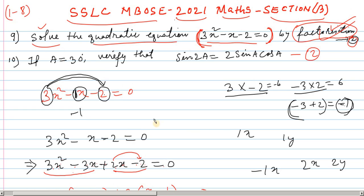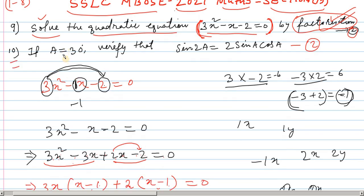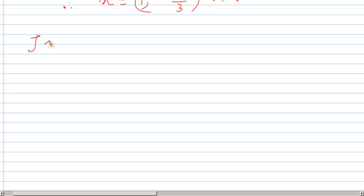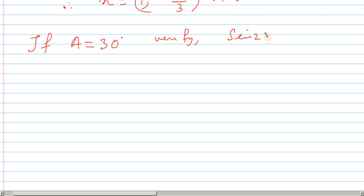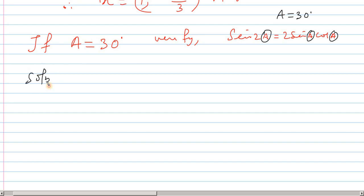Now question number 10. If A equals 30 degrees, the question from the question paper asks us to verify that sin 2A equals 2 sin A cos A, where A equals 30 degrees. This is the trigonometry identity to verify.